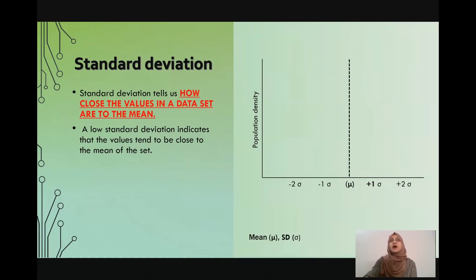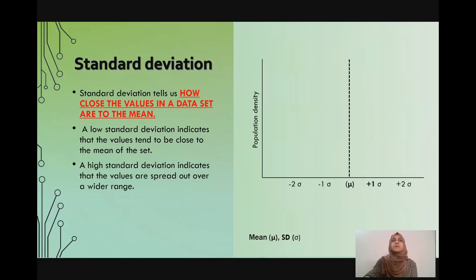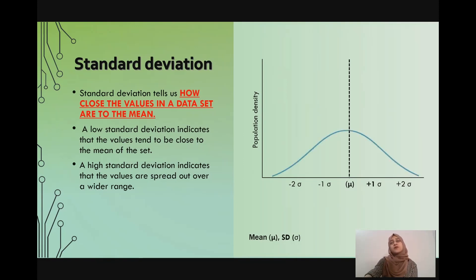But when we have a high standard deviation, this would indicate that the values are spread out over a wider range. So our curve would look something like this — you see how the curve is flattened out and our values on the x-axis have spaced out.